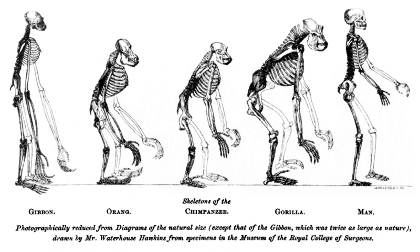In the 18th century, Linnaeus and others had classified man as a primate, but without drawing evolutionary conclusions. It was Lamarck, the first to develop a coherent theory of evolution, who discussed human evolution in this context.